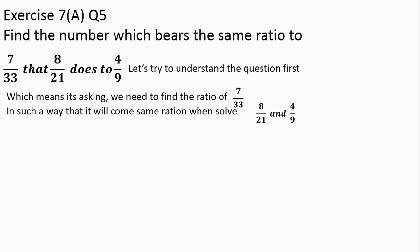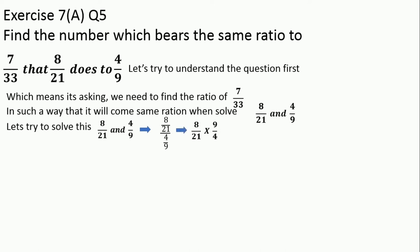What I am going to explain just now is not going to be written in your exam — this is just for your understanding. Let's try to solve 8/21 and 4/9: we get 8/21 ÷ 4/9, which equals 8/21 × 9/4, giving us 6/7. So if we solve 8/21 and 4/9, the answer is 6/7.